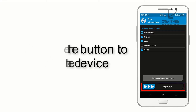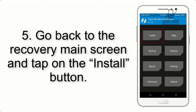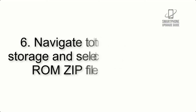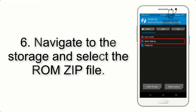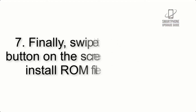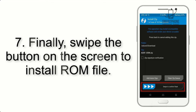Step 4: Swipe the button to wipe the device. Step 5: Go back to the recovery main screen and tap on the Install button. Step 6: Navigate to the storage and select the ROM zip file.